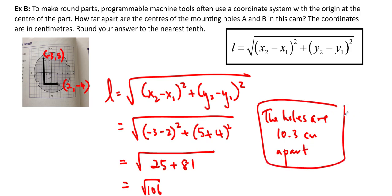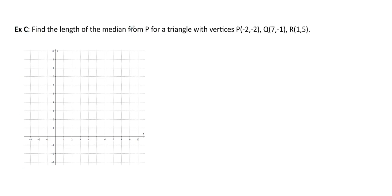We're going to do one more question to find the length of the median from P for a triangle with vertices P, Q, and R. I do have this grid here, and you could use it if you want, but you actually don't need to. Remember that the median goes from the midpoint of the opposite side. So all I need to do is find the coordinates for that midpoint, and then use P. So I'm finding the length PM, and that's going to be the midpoint of QR.